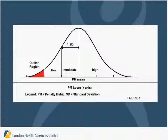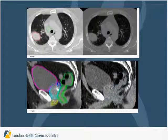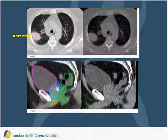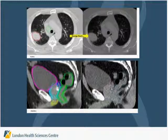What we're interested in is whether or not a contour is an outlier — that's essentially what this research project did. Here are some examples: a lung case showing the multiply-contoured dataset for the primary and for the lymph nodes, and on the right, the staple contour — the consensus of all those contours for both structures.